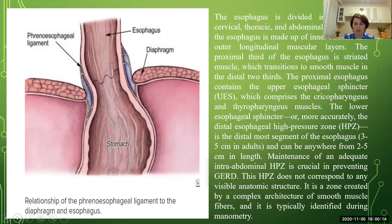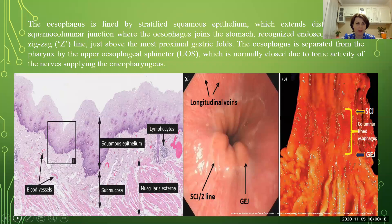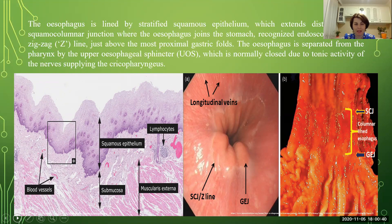Maintenance of an adequate intra-abdominal pressure zone is crucial for preventing GERD. On the histology level, the esophagus is lined by stratified squamous epithelium, which extends distally to the squamous columnar junction where the esophagus joins the stomach, recognized endoscopically by a zigzag line. Just above the most proximal gastric folds, the esophagus is separated from the pharynx by the upper esophageal sphincter, which is normally closed due to tonic activity of the nerve supply and the cricopharyngeus.